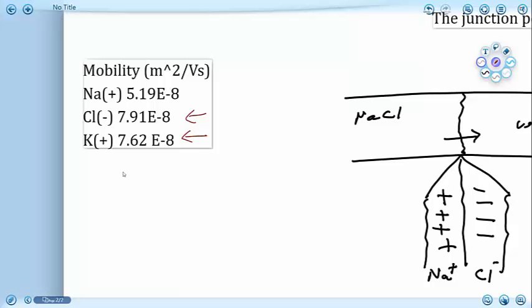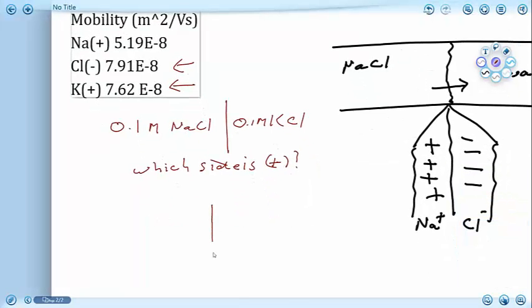So what can we take away from this? What type of problems could we think of to assess our knowledge of junction potentials? What if we had 0.1 molar sodium chloride in connection with 0.1 molar potassium chloride? The question would be: at the interface, which side is positive? If we think about what's going on here, we've got an interface. We've got sodium ions on one side, chloride ions on one side, potassium ions on this side, and also chloride ions on this side.